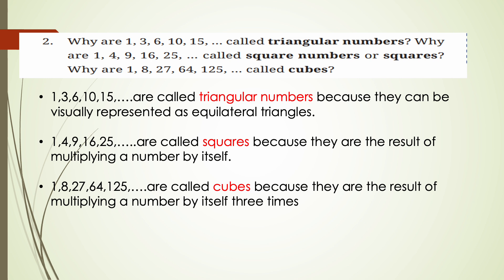Why are 1, 3, 6, 10, 15 called triangular numbers? Why are 1, 4, 9, 16, 25 called square numbers? Why are 1, 8, 27, 64, 125 called cubes? Triangular numbers are called so because they can be visually represented as equilateral triangles. Square numbers are the result of multiplying a number by itself: 1×1=1, 2×2=4, 3×3=9. Cubes are the result of multiplying a number by itself 3 times: 1×1×1=1, 2×2×2=8, 3×3×3=27.